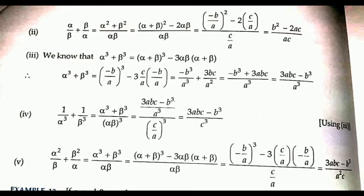In subtopic 4, we have to find 1/α³ + 1/β³. Taking αβ³ as LCM, the numerator is α³ + β³, which we already calculated in subtopic 3 as (3abc - b³)/a³. Dividing by (c/a)³, the a³ and a³ cancel, and we are left with (3abc - b³) / c³.